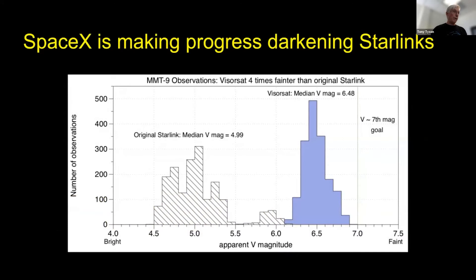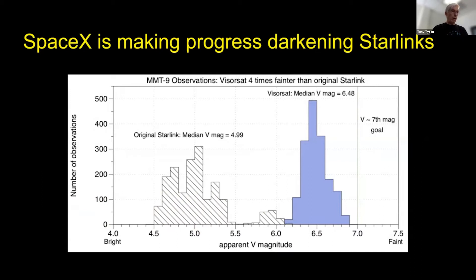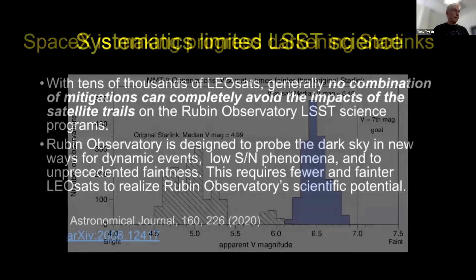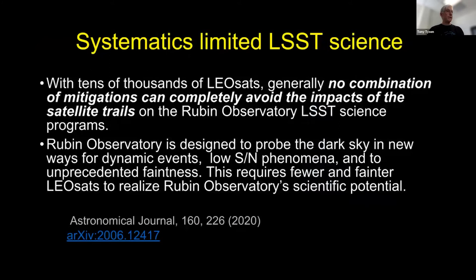This is an example of how faint SpaceX has been able to go — about a one magnitude improvement over the original Starlink 0.9s. One particular invocation of a mitigation — a sunshade, basically — on one satellite shows they're down almost to the acceptable brightness. But with tens of thousands of these, generally no combination of mitigations can completely avoid the impacts of satellite trails in our science with LSST.